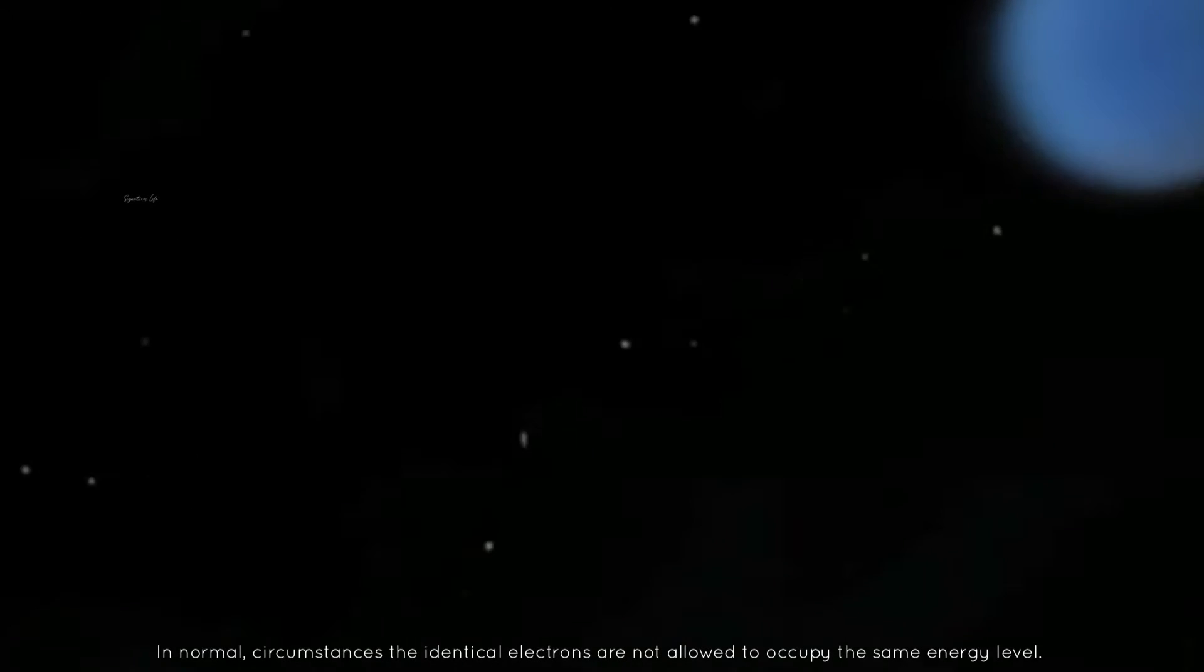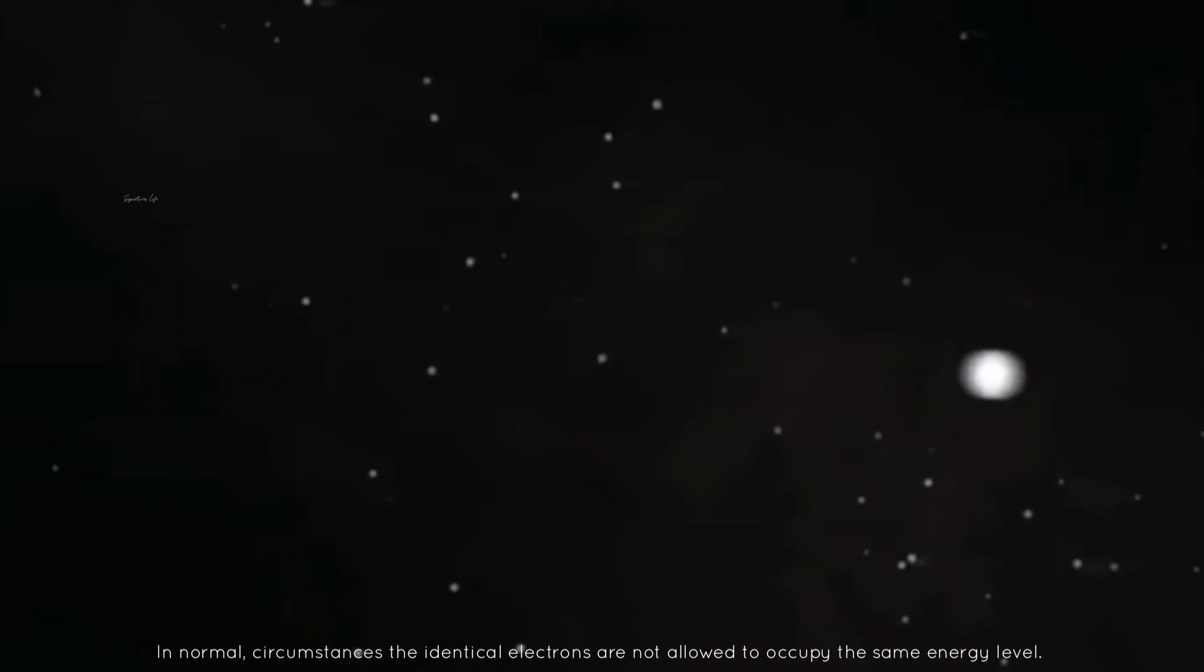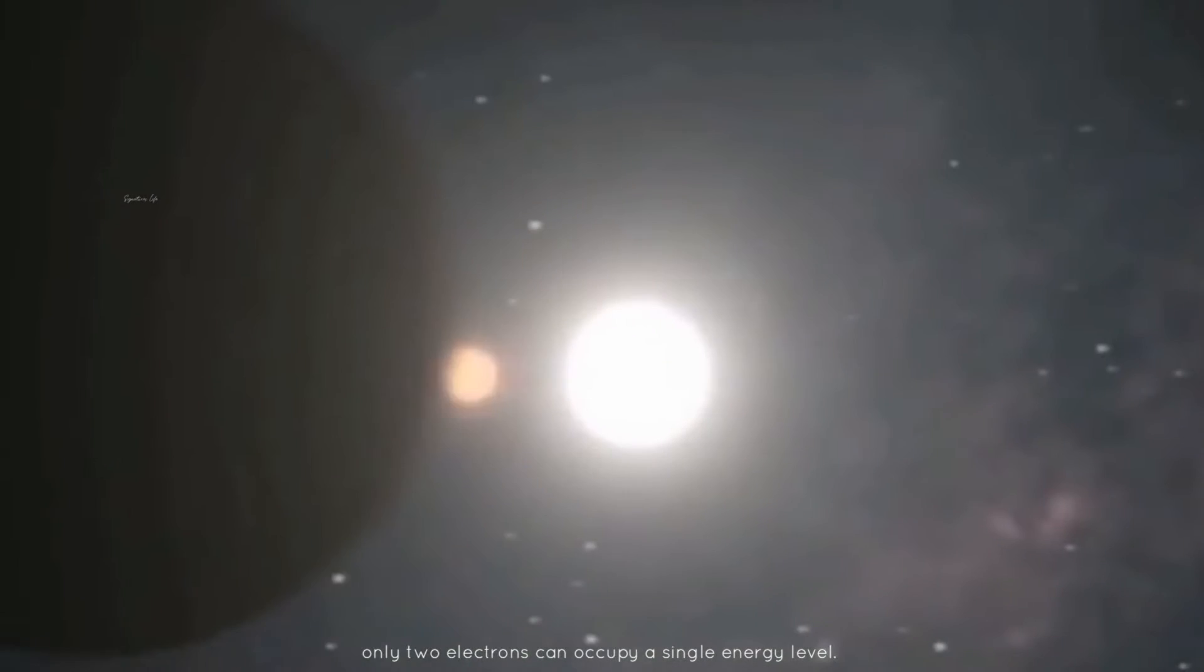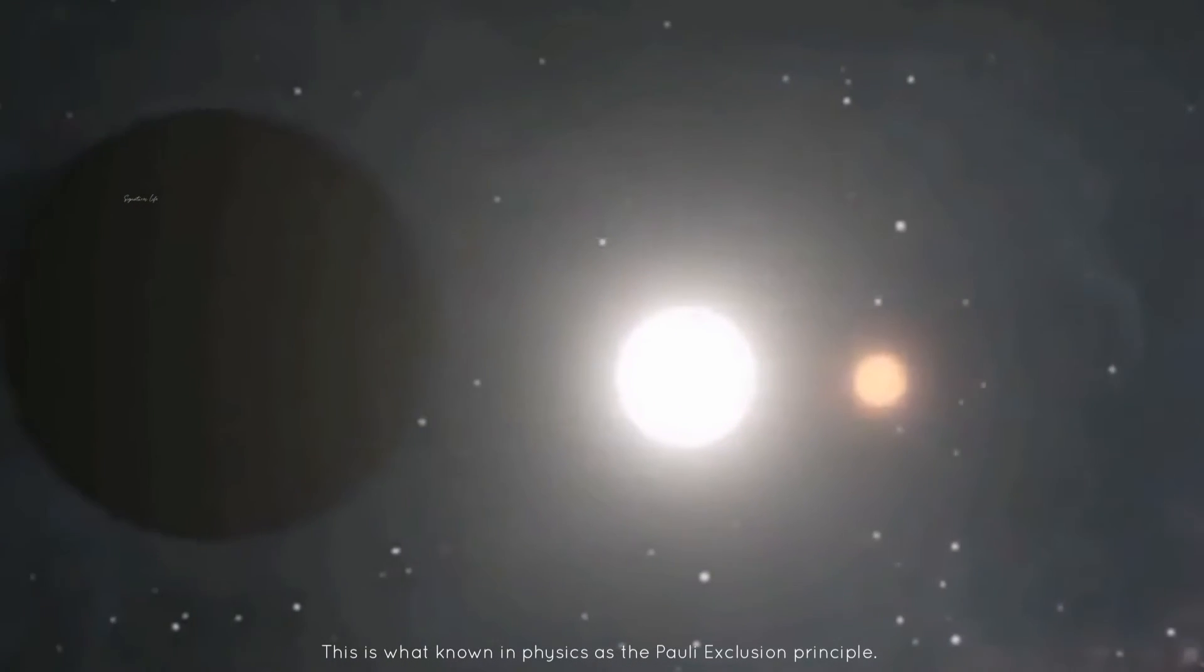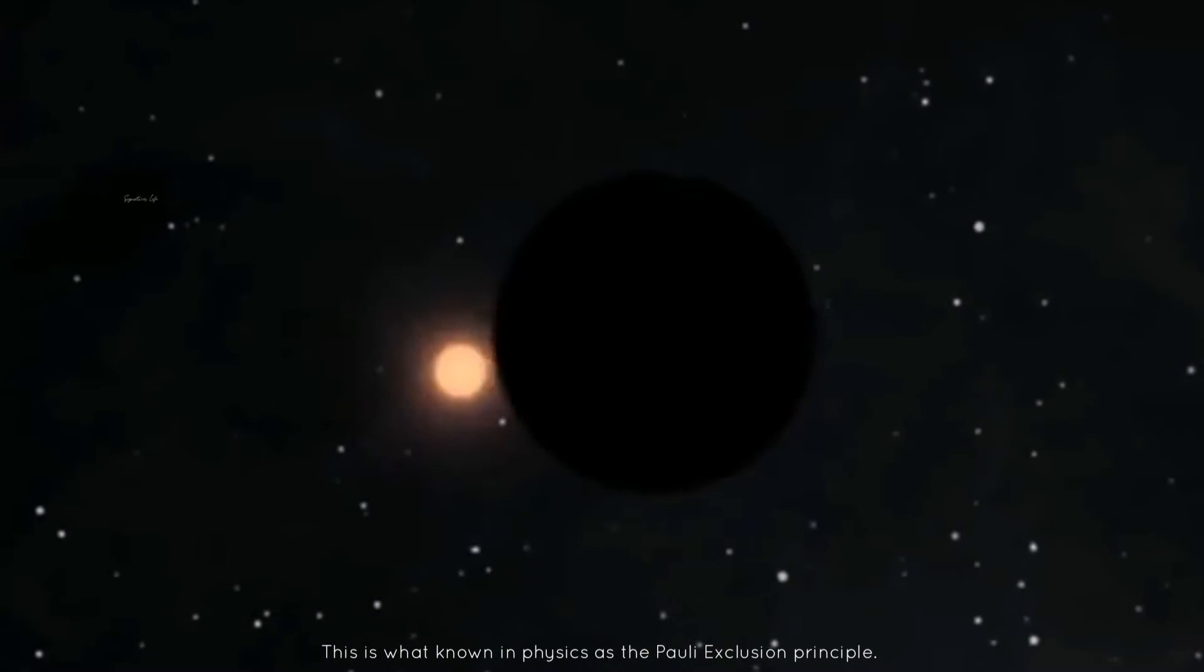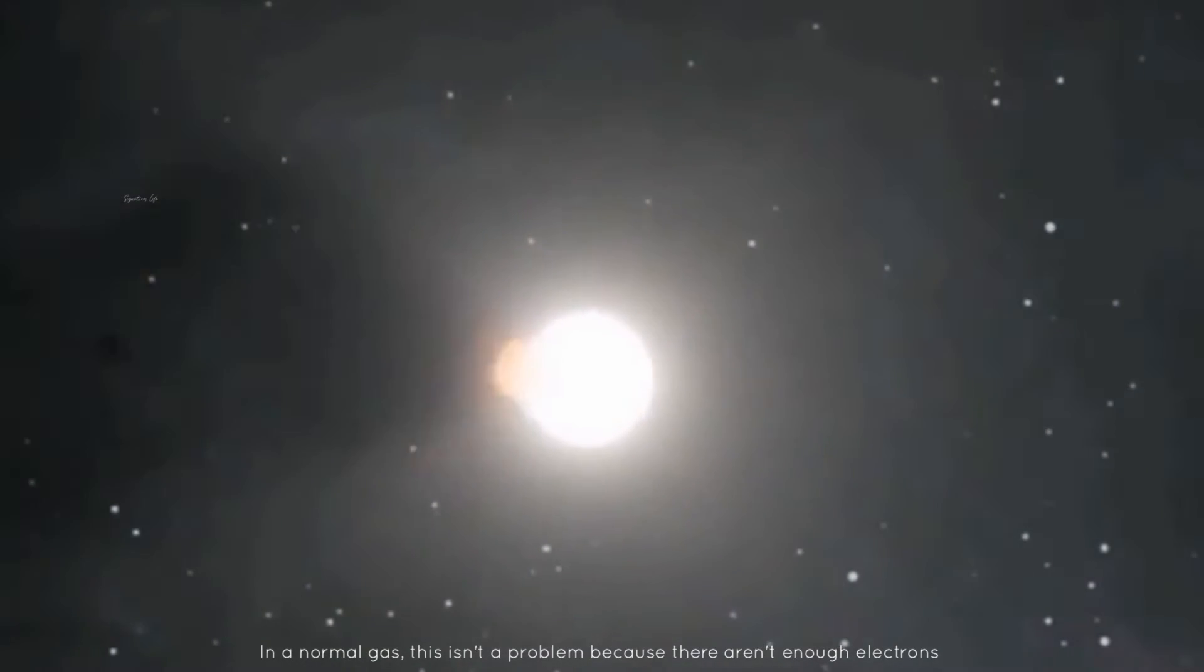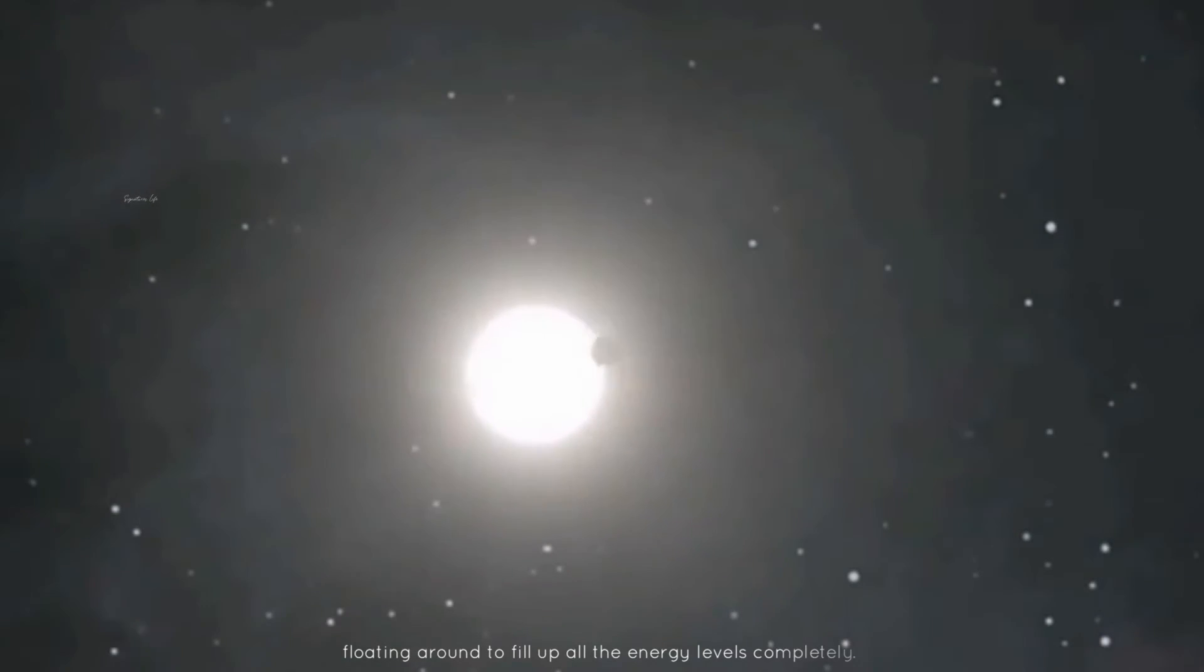In normal circumstances, identical electrons are not allowed to occupy the same energy level. Since there are only two ways an electron can spin, only two electrons can occupy a single energy level. That is what's known in physics as the Pauli exclusion principle. In a normal gas, this isn't a problem because there aren't enough electrons floating around to fill up all the energy levels completely.